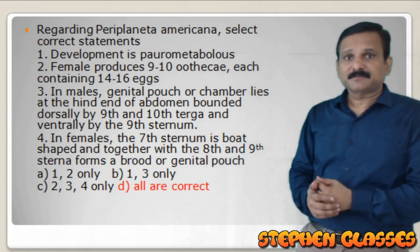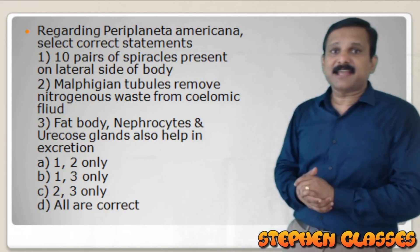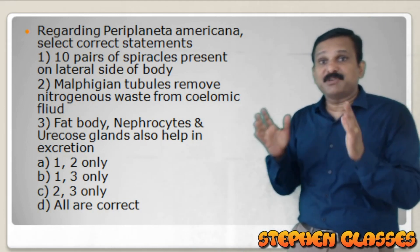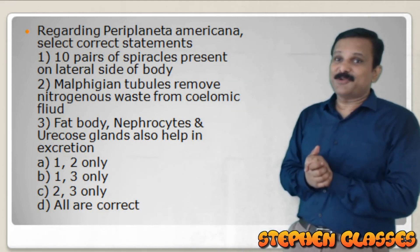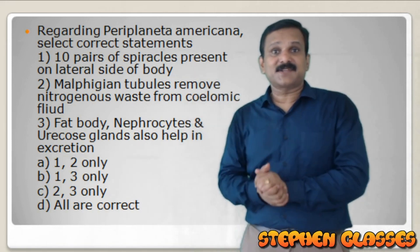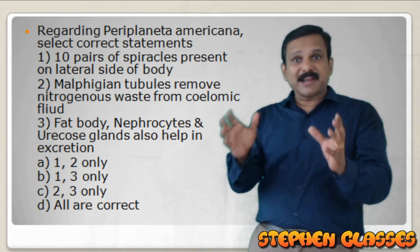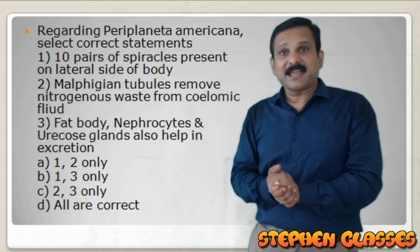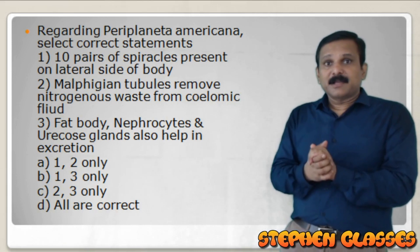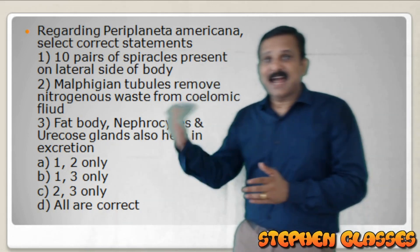The next question is about spiracles and Malpighian tubules in Periplaneta americana. Spiracles are part of the tracheal system and are external openings helping in respiration. Malpighian tubules are excretory in function. There are 10 pairs of spiracles - 2 pairs in the thorax (mesothorax and metathorax; the prothorax has no spiracles) and 8 pairs in the abdomen. There are approximately 150 tiny Malpighian tubules.